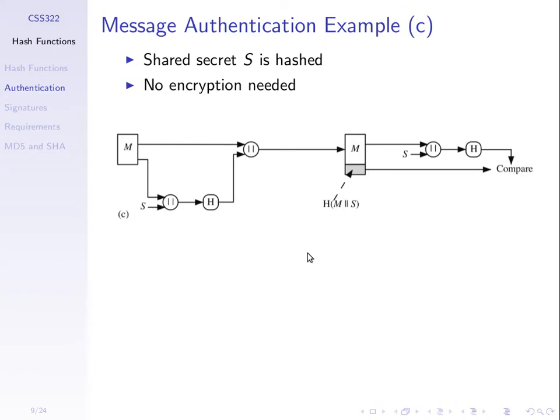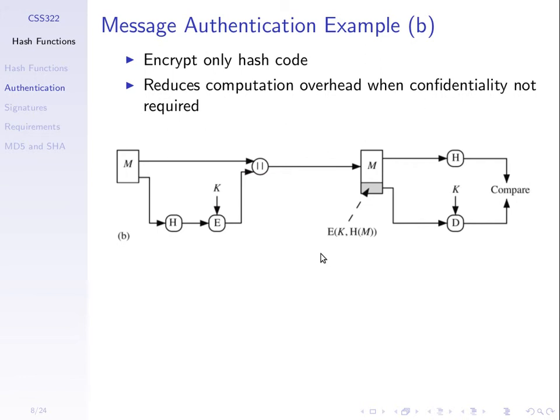What we'll do next lecture is look at some of those other schemes. You should also try — what I commonly ask in exams is: here's a scheme, show me why the attacker cannot defeat it. And that requires you to ask yourself: what if the attacker did this, how would B detect that? What if the attacker did something else, how would B detect it?